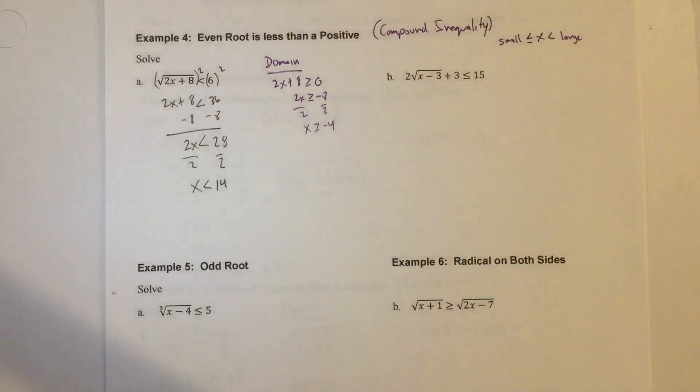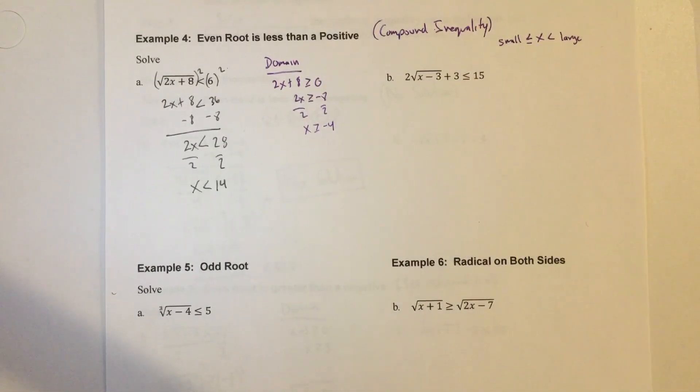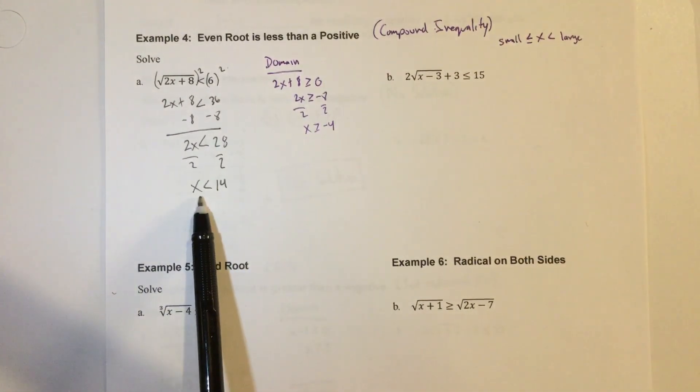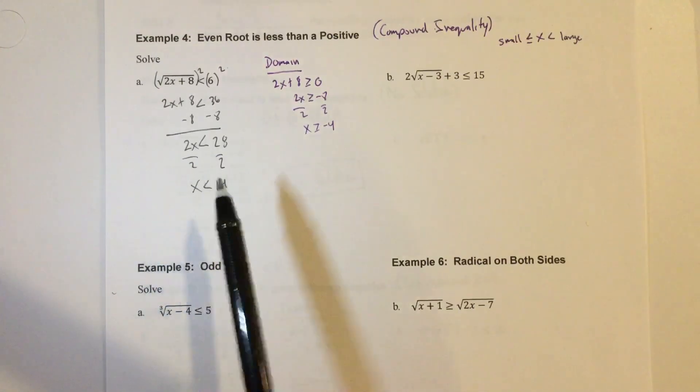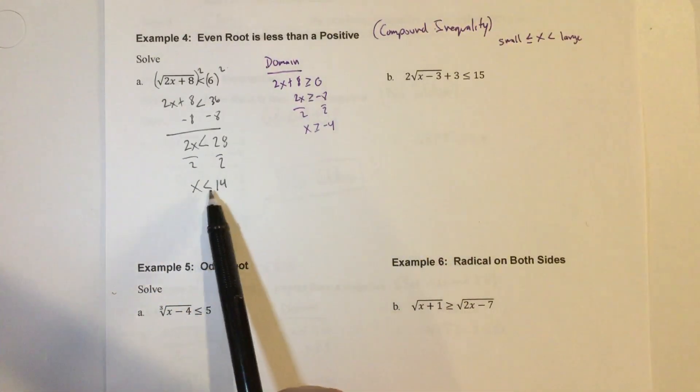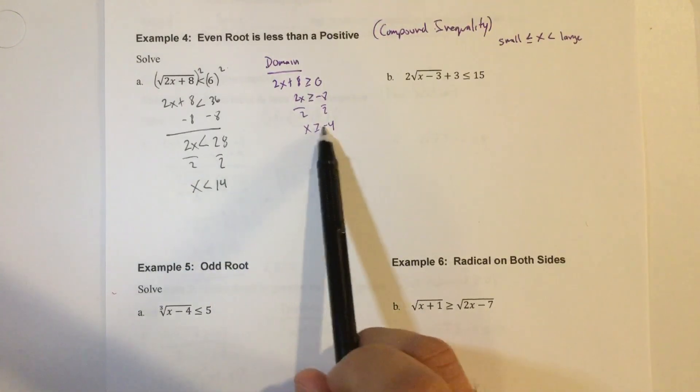Now, one more thing we have to actually check here is, this is x is less than 14, but we know that a square root function does not go towards negative infinity. It starts at 0 based on the parent function. So what we're going to do is we're going to compare this answer to our domain.